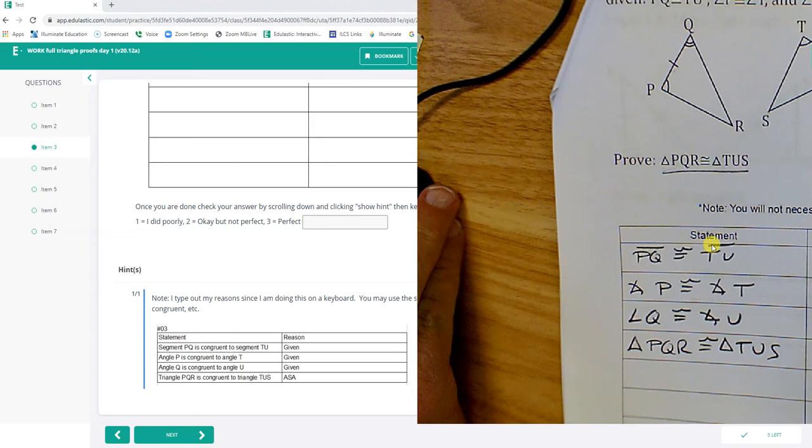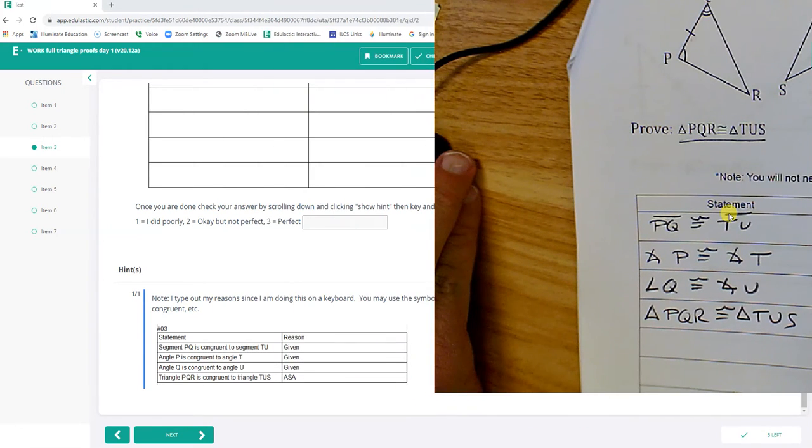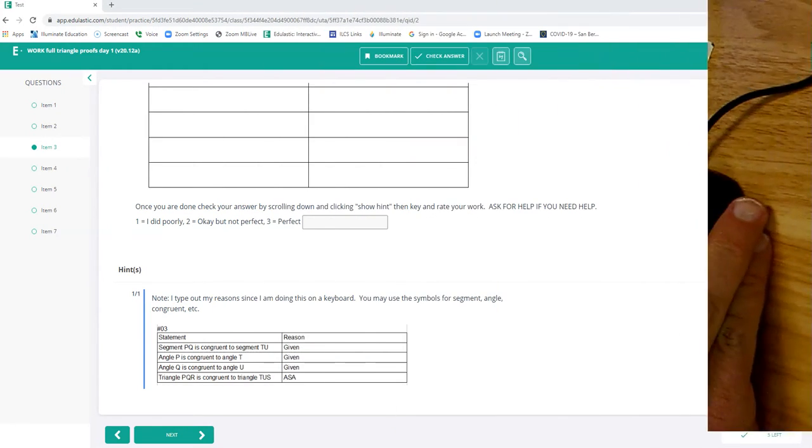PQ, TU. PQ, TU. P to T, Q to U. Given, given, given. ASA. PQR, TUS. Looks good to me.